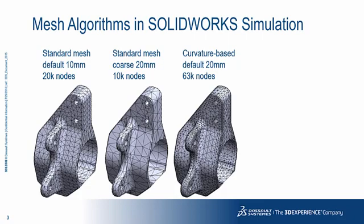For a model with disproportionate features, such as very small fillets, you either apply manual mesh controls or, to do everything fully automatically, you can use the curvature-based mesher. It is extremely powerful, refining the mesh around small features.